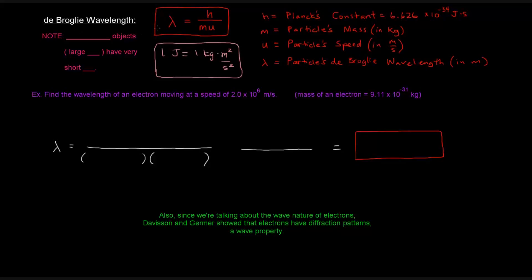De Broglie's equation allows you to find the wavelength of a particle, which is a strange concept — it assumes matter is acting like a wave. One thing to notice is that objects with large masses have very short wavelengths. If you increase the mass in the denominator, the wavelength gets smaller because you're dividing by a bigger number.